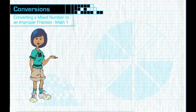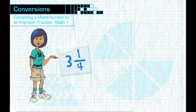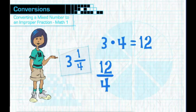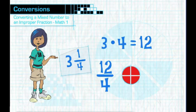Let me walk you through this using the mixed number three and one-fourth. First, we multiply the whole number three by the fraction's denominator to find out how many fourths there are in the whole number three. Three times four equals twelve. The resulting product twelve becomes the new numerator of the improper fraction. The original denominator four of the mixed number stays the same — the denominator always stays the same. So, you have converted the whole number three to the improper fraction twelve-fourths.